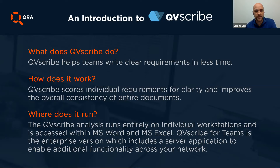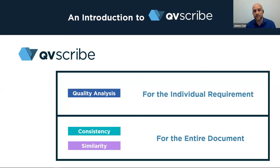A quick overview of QB Scribe before we hand things over to Mav. QB Scribe helps teams write clear requirements in less time. It works by improving the overall clarity and consistency of documents through a series of checks and runs directly within Microsoft Word and Excel. We also have an enterprise version called QB Scribe for Teams, which puts a server application on your network and allows you to share licenses and analysis configurations across your company to get everybody on the same page.